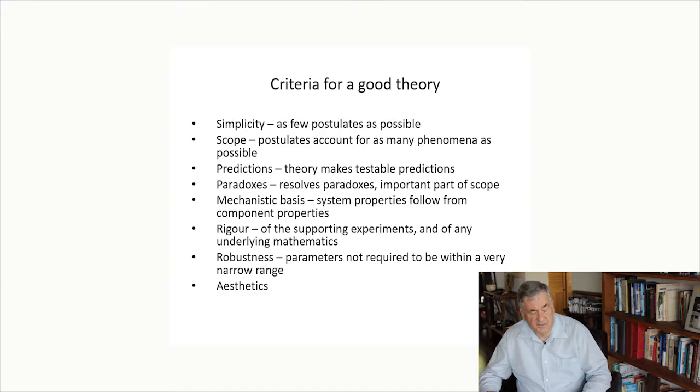Secondly, the scope of the theory needs to be such that we see how a large number of phenomena can be understood within the context of a small number of facts. The theory needs to make predictions. That's a good way to tell whether we have a good theory. If it makes a prediction, we can then test to see whether that prediction is actually fulfilled when we do the experiment.